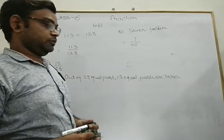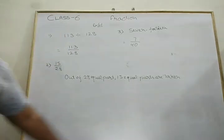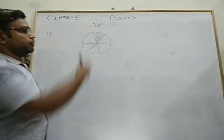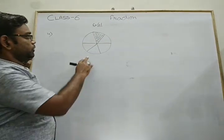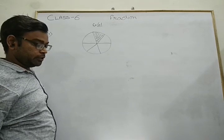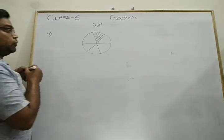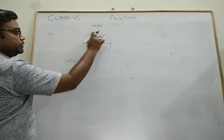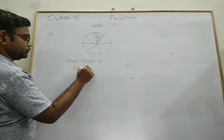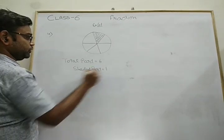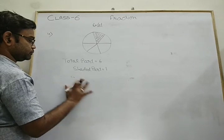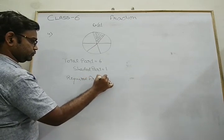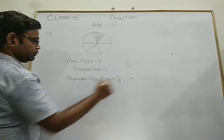Now for the figure-based problems, the question says: what fraction of each of the following figures is shaded? We must count the total parts — 1, 2, 3, 4, 5, 6 — and the shaded part is 1. So the required fraction equals 1 upon 6.